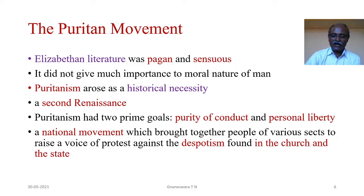Puritanism had two prime goals: purity of conduct and personal liberty. Puritans were not a religious sect. It was a national movement which brought together people of various sects to raise a voice of protest against the despotism found in the church and the state.